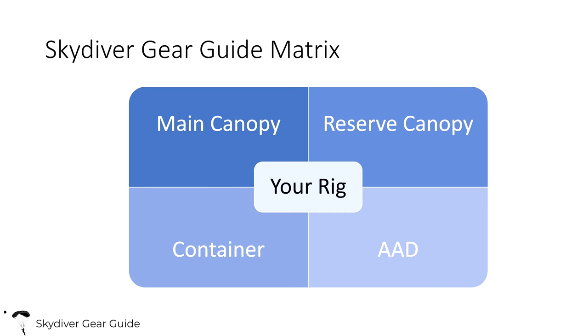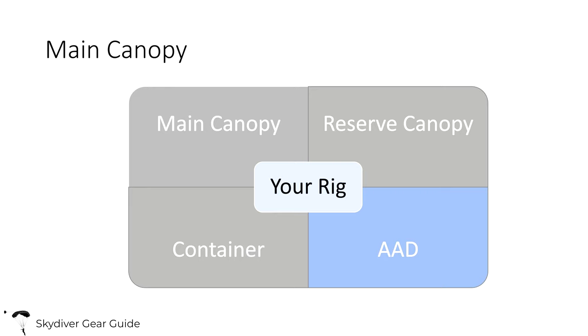If you're new to skydiving, you know you need a rig and your rig is going to be comprised of four primary components: the main canopy, the reserve canopy, the AAD, and the container that houses the three other components. This video is just going to concentrate on the AAD portion. I will have other videos coming out which talk about how to select the main canopy, a reserve canopy, and a container.